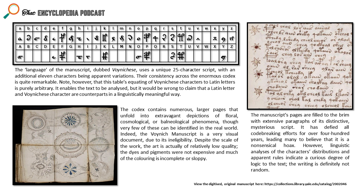Alternatively it might be something steganographic — recalling the episode on Bible codes — where some sort of cipher exists but requires a mutually agreed-upon reference point, like every third or fourth character on every second paragraph. Without that arbitrary rule there's no way to decipher it, because if you impose your own arbitrary rules on a text this size you will inevitably return meaningful-looking data. So if it is steganographic, it's functionally a hoax to us.